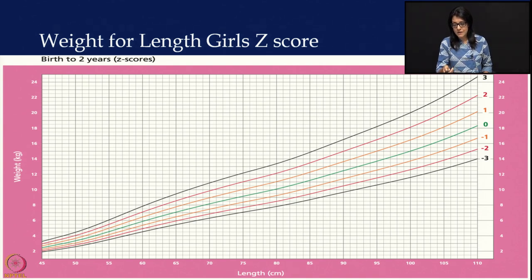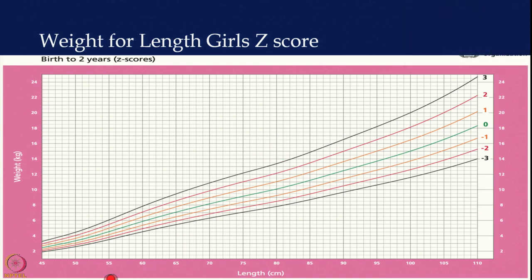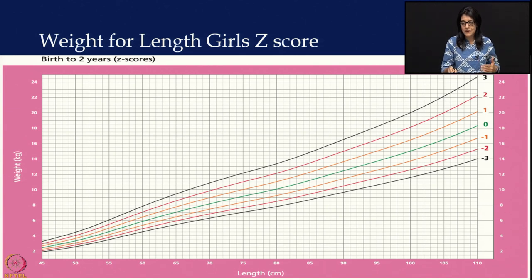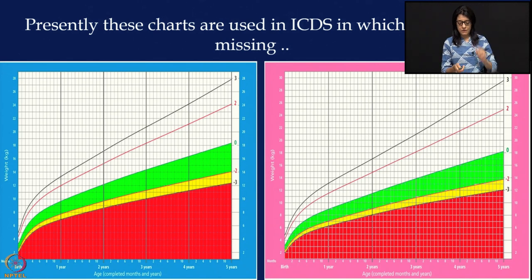This is your weight-for-length chart — on this chart you have length on one axis and weight on the other. When looking at the weight-for-length chart, this shows SAM and MAM: acute malnutrition. Between minus 2 and minus 3 standard deviation those are called MAM — moderately acute malnutrition — and below minus 3 is SAM — severe acute malnutrition. That is also called wasting. We have a very high percentage of children falling below minus 2 standard deviation, which is an emergency because acutely malnourished children have a high risk of mortality.